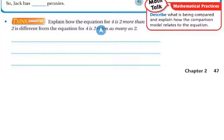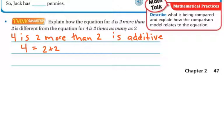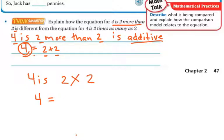Think smarter. Explain how the equation 4 is 2 more than 2 is different from the equation 4 is 2 times as many as 2. Well, the first one, 4 is 2 more than 2, that's saying 4 is 2 more than 2. Well, it's additive, because it's saying 4 equals 2 more than 2. So you're adding 2 plus 2 is 4. The second one is saying 4 is 2 times as many as 2. So it's saying that 4 equals 2 times 2.